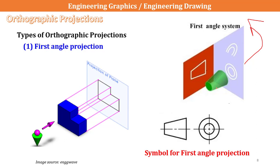If you look at the front view, you can see the front view. You can see two concentric circles. If you look at the front view, you can see the symbol for the first angle projection.